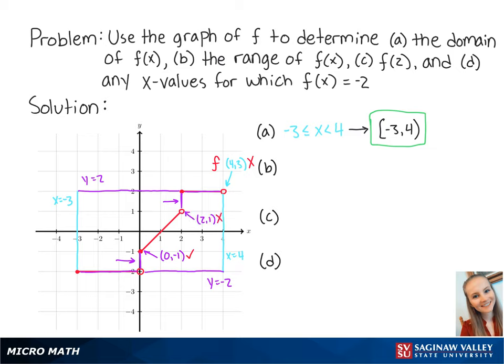The point (2, 1) does not exist, so we cannot include 1. This means y equals negative 2, or y is between negative 1 inclusive and 1 exclusive, or y equals 2. So we write the range as {-2} ∪ [-1, 1) ∪ {2}, with a bracket on the left because negative 1 is included and a parenthesis on the right because 1 is excluded.